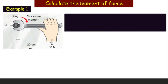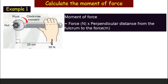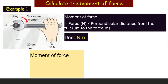Let's look at an example. In this diagram we use a wrench, applying a force of 50 newtons. The distance between the force and the fixed point — the fulcrum — is 20 cm. To find the moment of force, remember the formula: force times distance. But the force must be in newtons and the distance must be in meters.